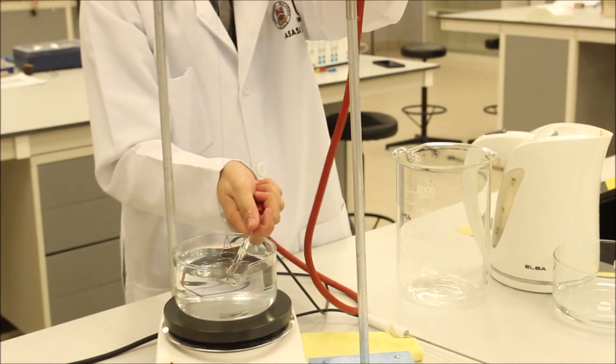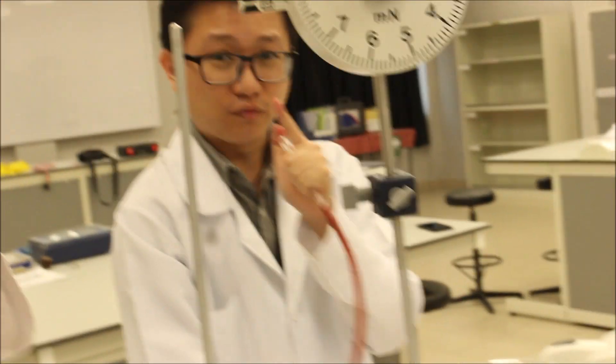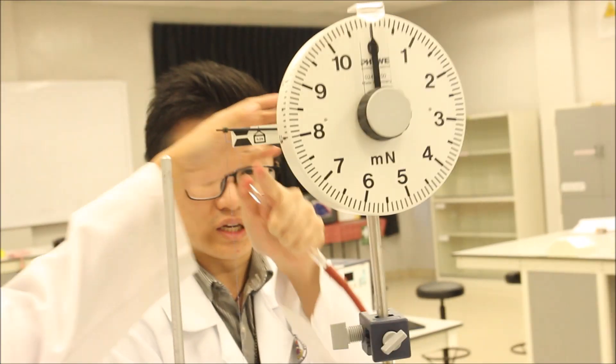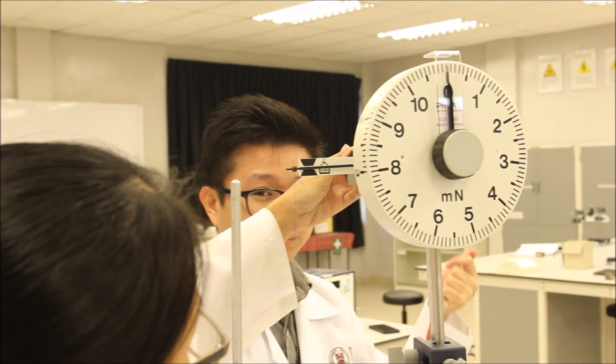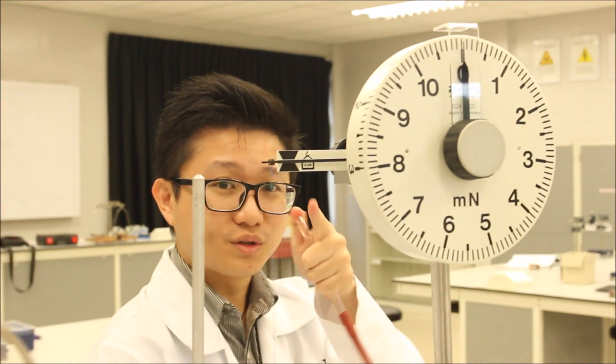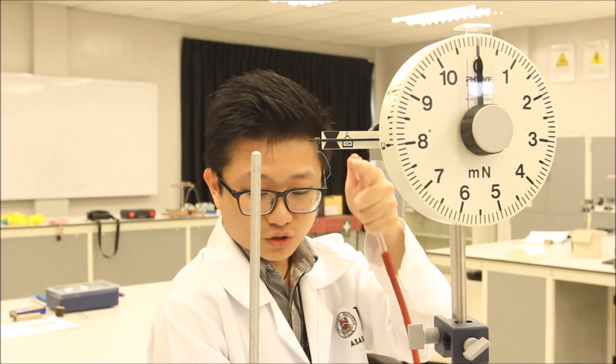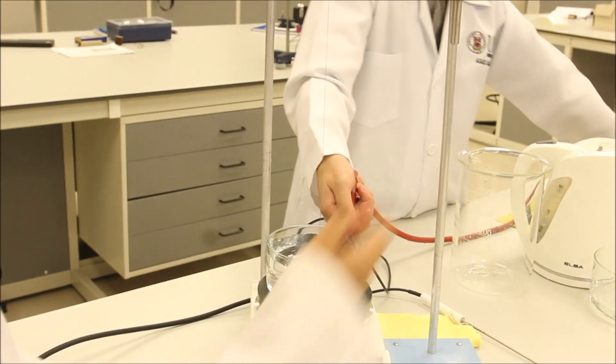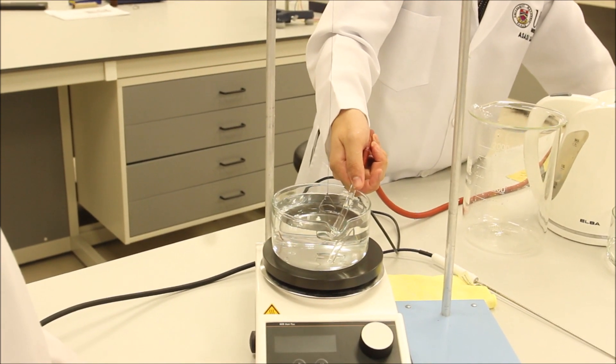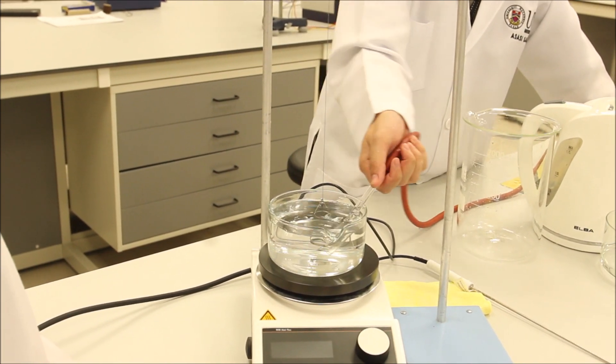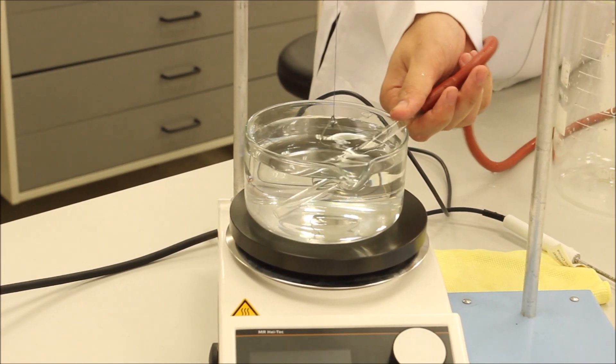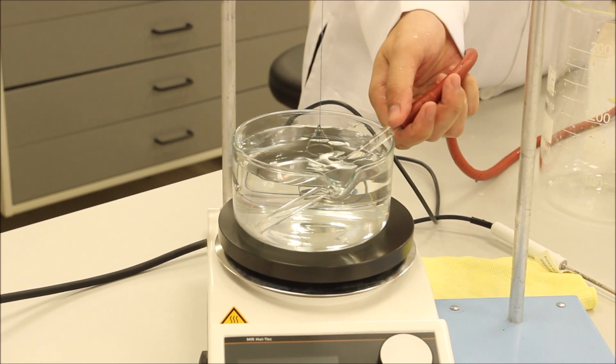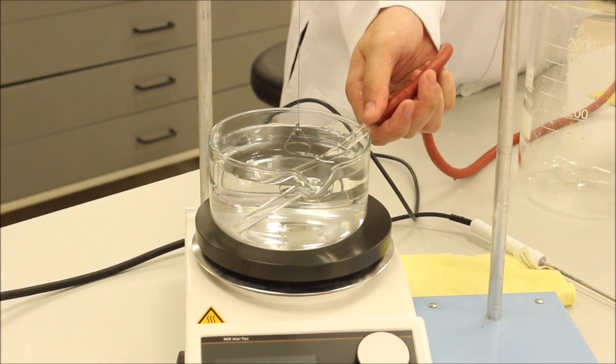Miss Flo will actually turn the torsion dynamometer. However, before that, she must make sure it is balanced. The pivot is at the back. As you can see, it is already balanced. Now, with this thing immersed, the moment I release this one, Miss Flo will slowly turn the torsion dynamometer until the ring comes out. In one, two, three.